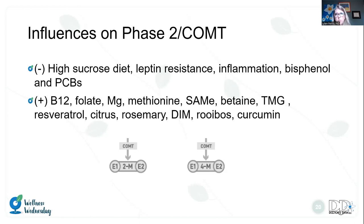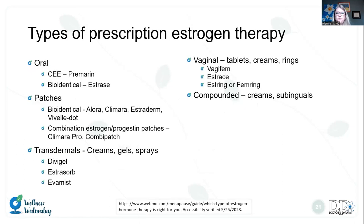To support phase 2 or COMT activity, you can promote methylation. Let's talk about types of estrogen therapy — there are a lot to choose from: oral patches, transdermal creams, gels, or sprays; vaginal application in tablets, creams, or rings; and compounded, generally creams or sublinguals.